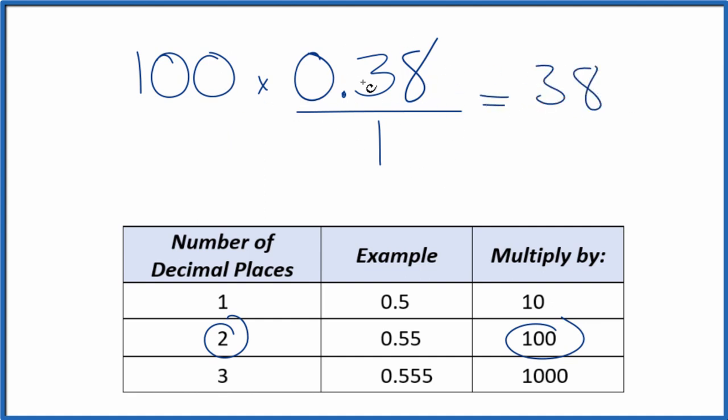But we can't just multiply the numerator by 100. We also have to multiply the denominator. Because 100 divided by 100, that's 1. So we're only multiplying by 1. We don't change the value, just the way it's represented. So 100 times 1, that is 100.